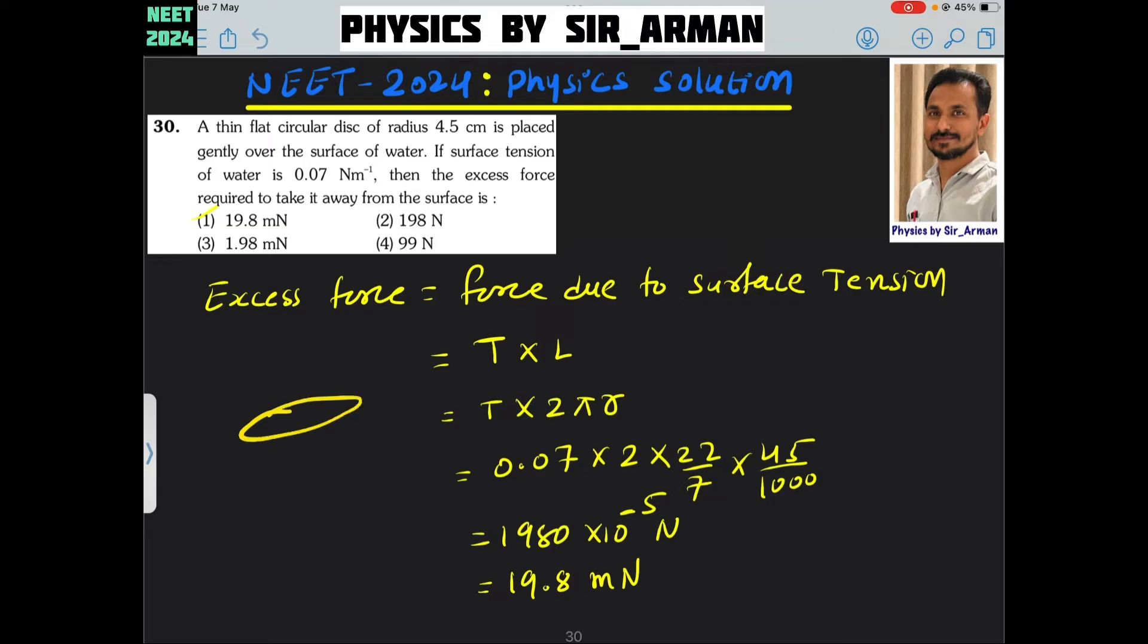If a disc is placed on a surface and you want to lift it, and if the surface is water or any liquid, then the surface tension will try to pull it. Due to surface tension, this disc will stick to the surface. So the total force you need to apply is its weight plus the force due to surface tension.